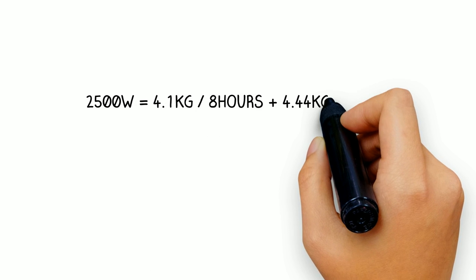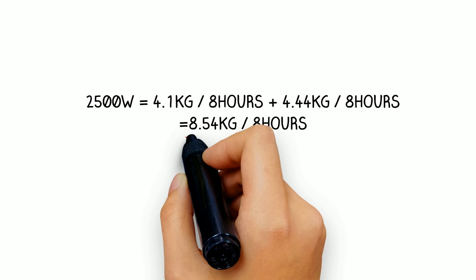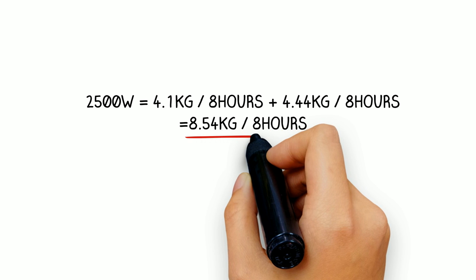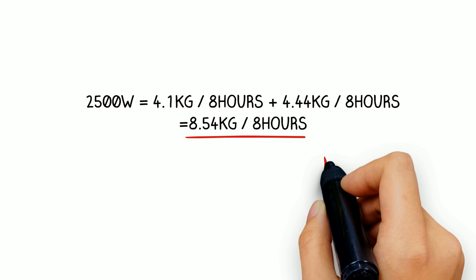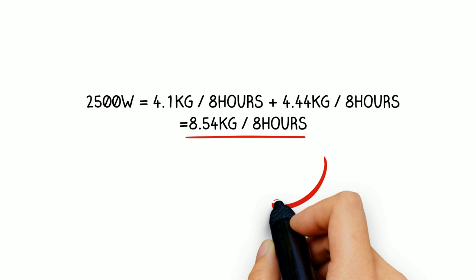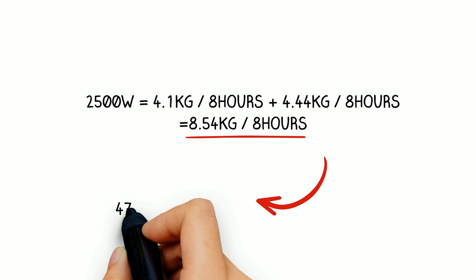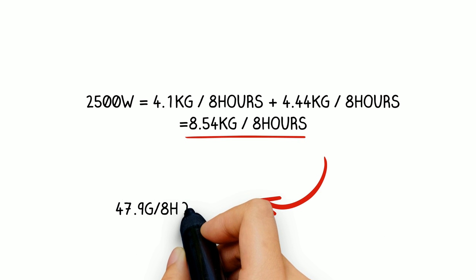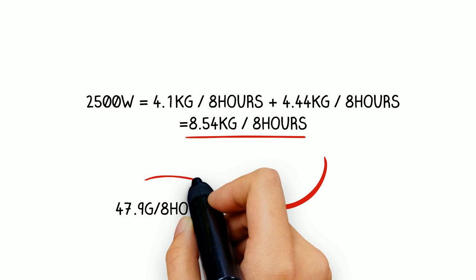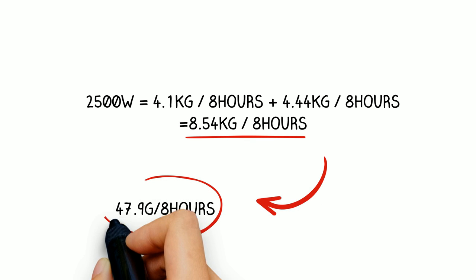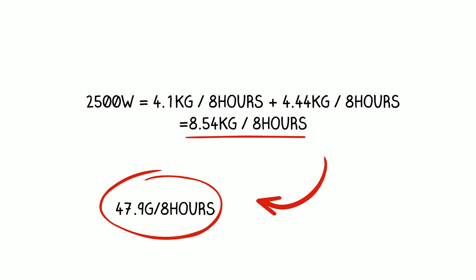By joining the two loads together you have an actual electrical load of 2500 watts. Now if you add the usages together—4.1 kilograms plus 4.4 kilograms of coal for eight hours—you have a total of 8.5 kilograms over an eight-hour period that the old calorimeters will use.